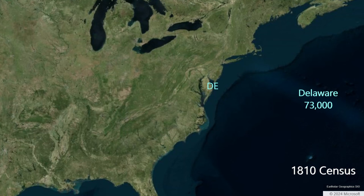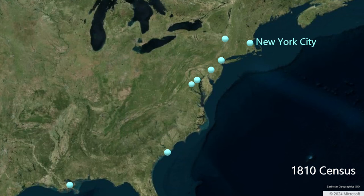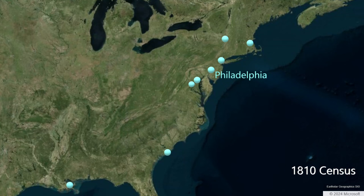No cities in the United States have reached 100,000 residents by 1810, but New York City is close. New York City, like New York State as a whole, has jumped in size since the last census to 96,000 residents. New York City is not only the largest city in the country, it is almost twice as large as the next city. Philadelphia, Pennsylvania, is the second largest city in the country, with nearly 54,000 souls.